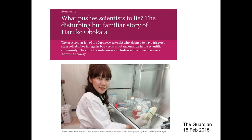Here's another case of scientific misconduct. This was a paper published in Nature, and within days of publication it was shown that the images were altered, that text was plagiarized, and that there was fabrication. This scientist suggested that we could make stem cells just by putting blood cells in a weak citric acid, and it would produce embryonic stem cells.